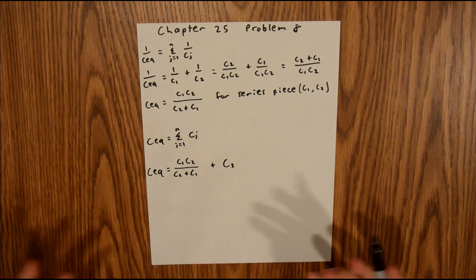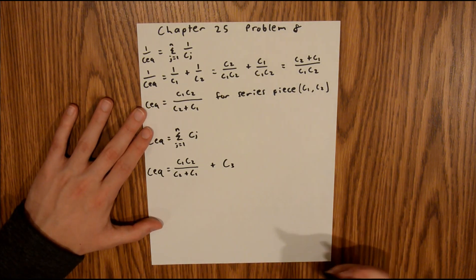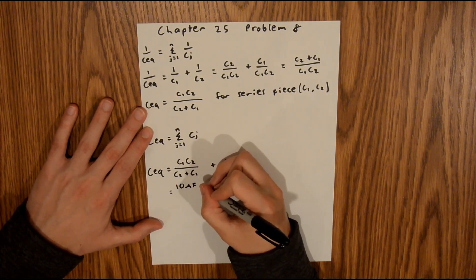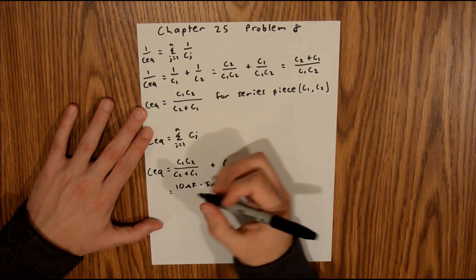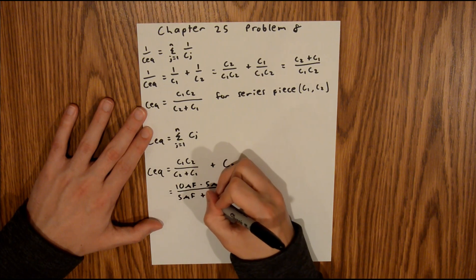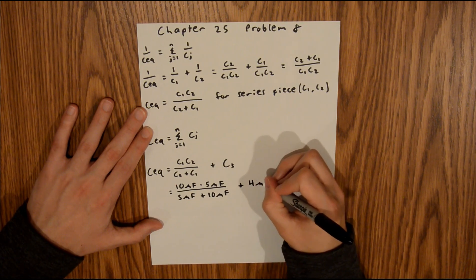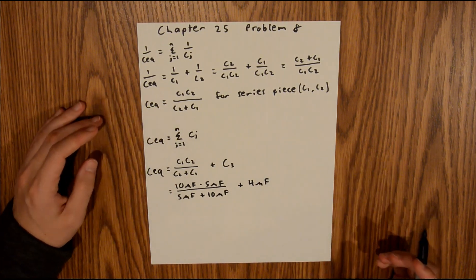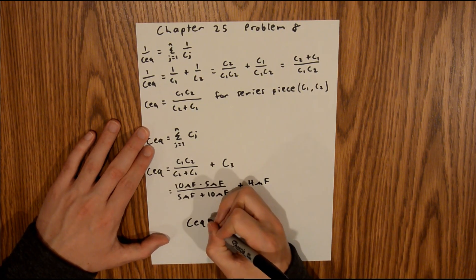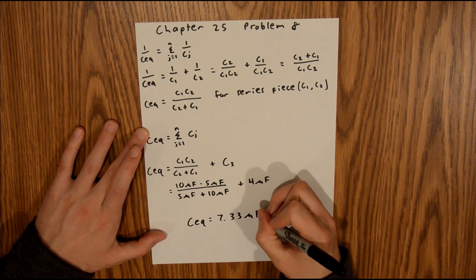That now takes into consideration every component of our system, so we can plug in the values that we are given in the problem. This is going to be equal to 10 microfarads times 5 microfarads over 5 microfarads plus 10 microfarads, and then all that plus 4 microfarads. If you plug all that into your calculator, you should find that the equivalent capacitance of the entire system is equal to 7.33 microfarads.